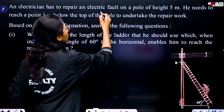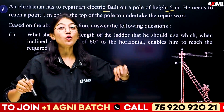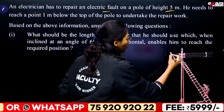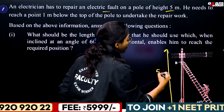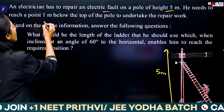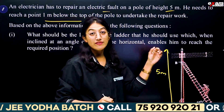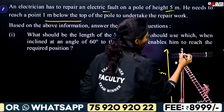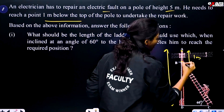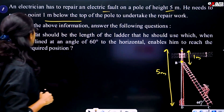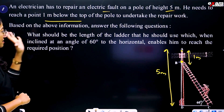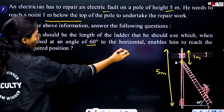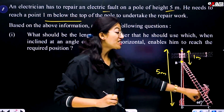An electrician has to repair an electric pole of height 5 meters. He needs to reach a point 1 meter below the top of the pole to undertake the repair work. So the electrician needs to reach a height of 4 meters on the pole.